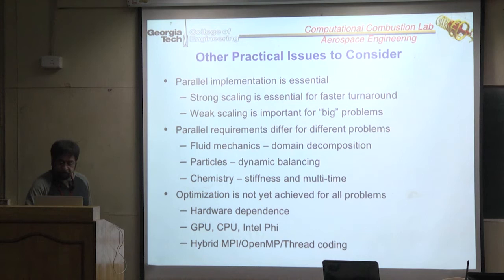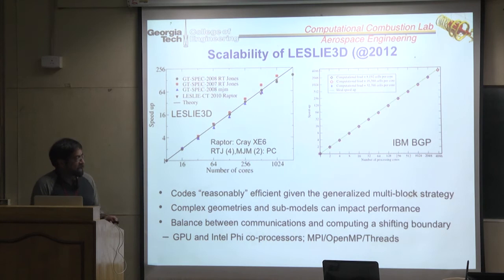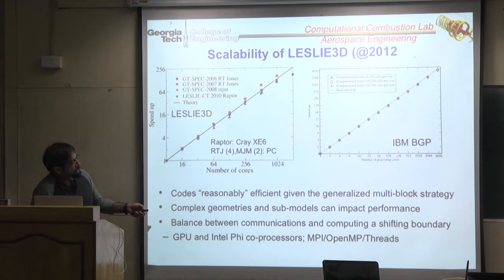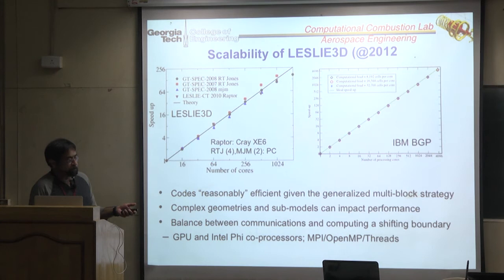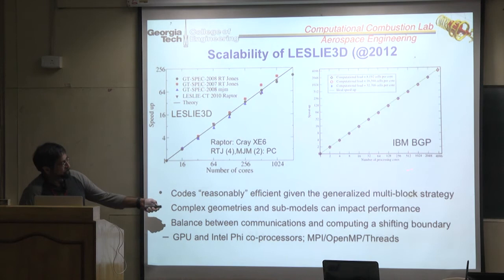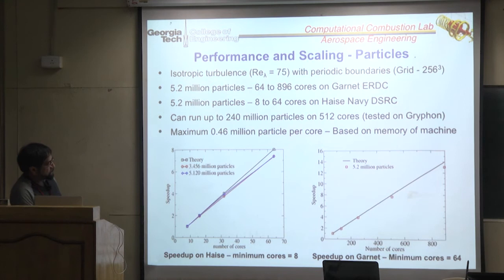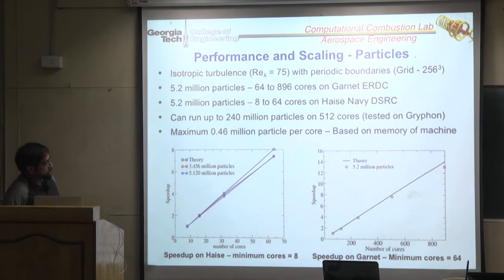We're showing the performance of the code—this was testing done many years ago on different quad-core architectures and on an IBM BGP going up to 4,000 processors. We get near-linear scaling up to 16,000 processors; for some cases near-linear scaling up to 60,000 processors, though we don't have 60,000 processors available—4,000 is typically what we use. For particles, we also did scaling studies tracking how many particles we can handle, running up to 1,000 processors.